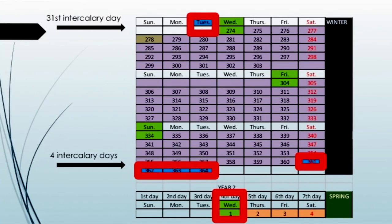The 31st intercalary day keeps it on Wednesday. Then the 11th month begins on Friday, and the 12th month begins on Sunday.